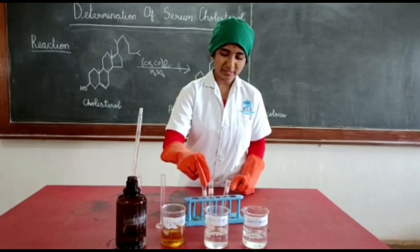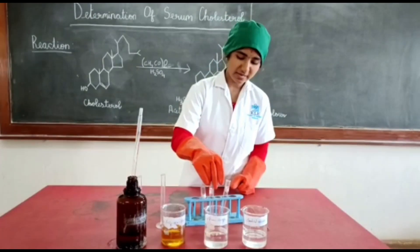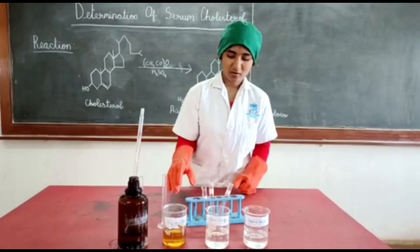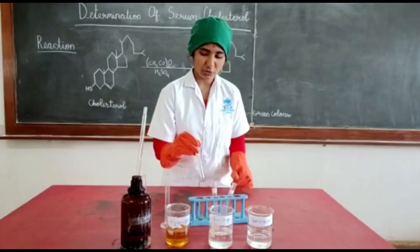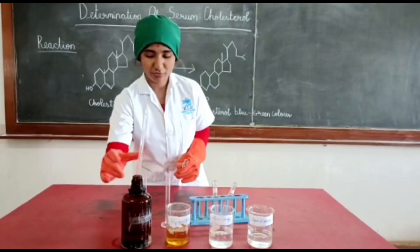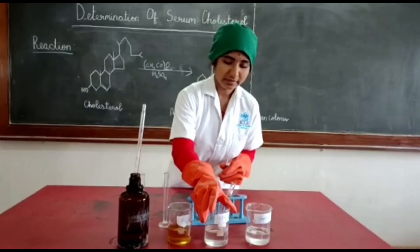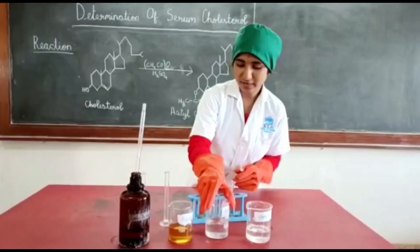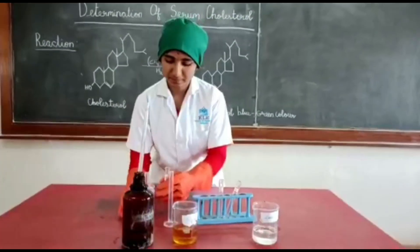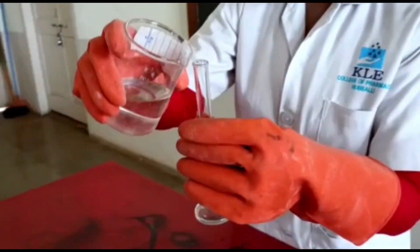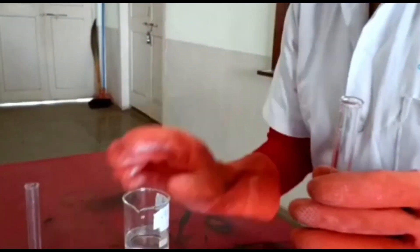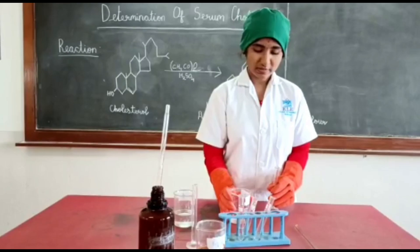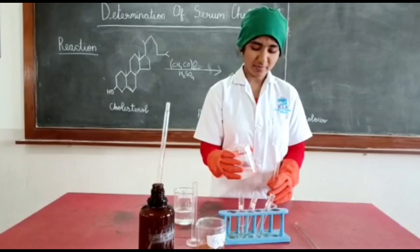Let's start the procedure. Label three test tubes as test, standard, and blank. In standard test tube we should add 5 ml of standard cholesterol solution, and in blank test tube we should add 5 ml of ferric chloride solution. In the test tube we should add 5 ml of serum sample.